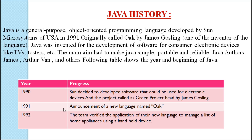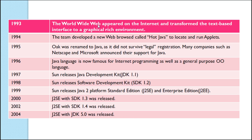In 1991, the team announced their new language. In 1992, the team verified the application of their new language to manage a list of home appliances using handheld devices. In 1993, the World Wide Web appeared on the internet and transformed the text-based interface to a graphical rich environment. At that time, the Green Project team came up with an idea to develop a web applet.